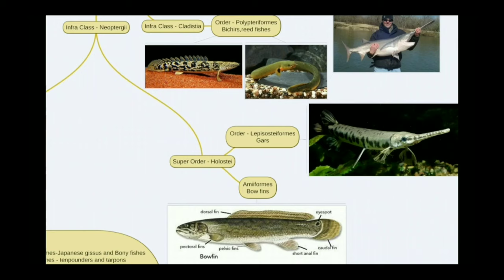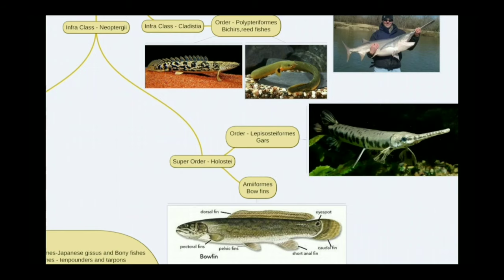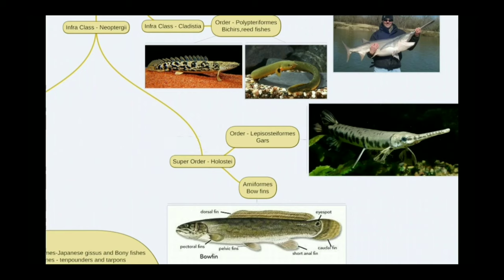Infraclass Neopterygii has two superorders: Holostei and Teleostei. Holostei is interesting because, like lungfishes, they can breathe air through the air bladder, which absorbs oxygen from the air. In superorder Holostei we have order Lepisosteiformes — the gars — whose eggs are very poisonous to humans; bluegill and channel catfish are natural predators of gar eggs. Order Amiiformes contains the bowfins, which are freshwater demersal fishes found primarily in North America.